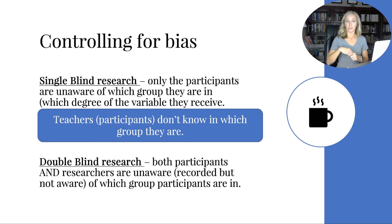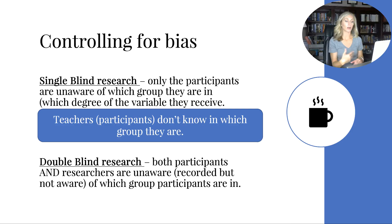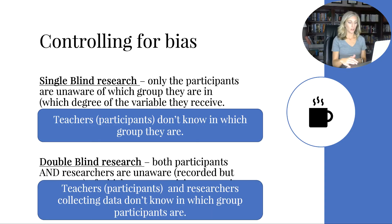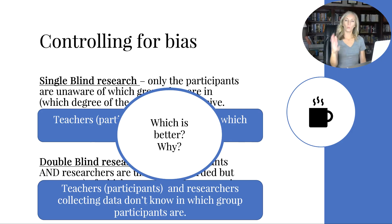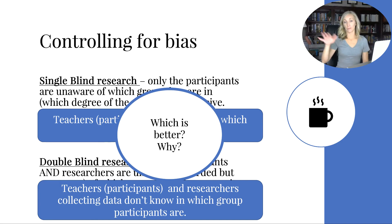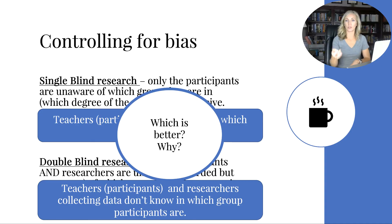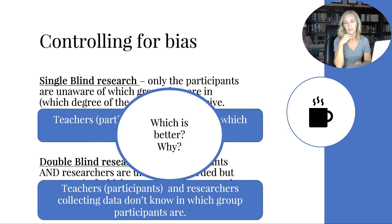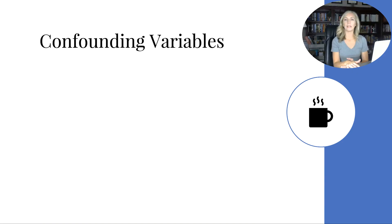Double-blind research is when both the participants and the researchers collecting the information are unaware of which group participants are in. In our experiment, both the teachers and the researchers collecting the data don't know which teachers are in which group. Double-blind is better because if a researcher knows a participant is in the control group, they might subtly prime that person — for example, asking 'are you tired?' before giving them the survey — which would bias the response.